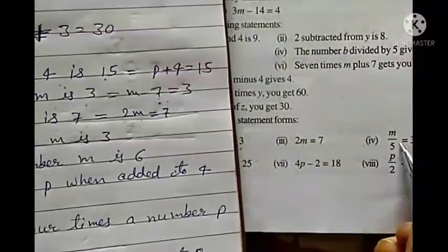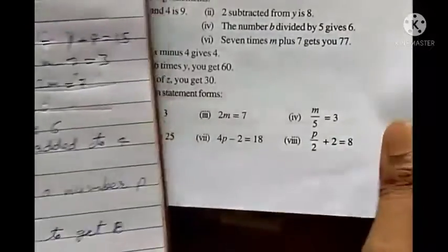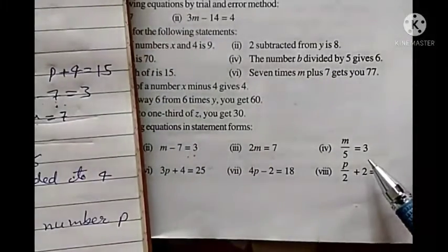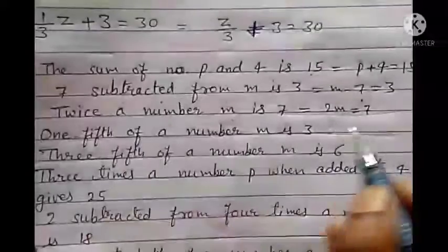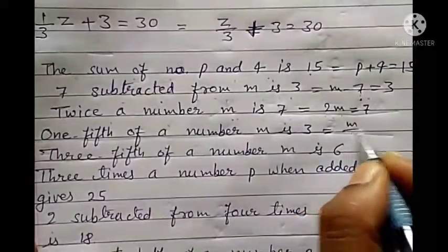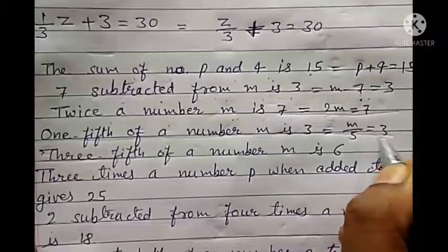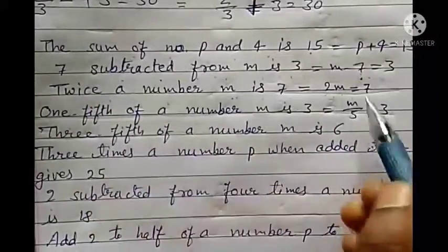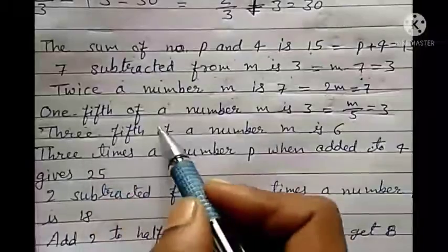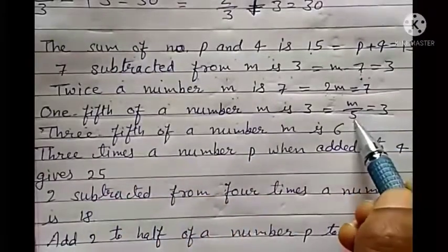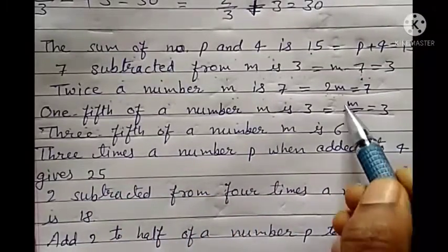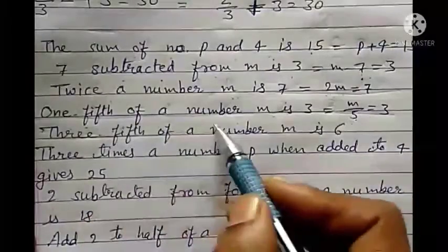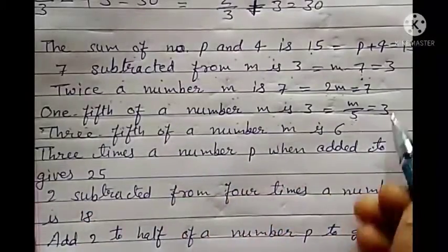Fourth: m upon 5 equals to 3. This means one-fifth of a number m equals 3. So the statement is: one-fifth of a number m is 3.